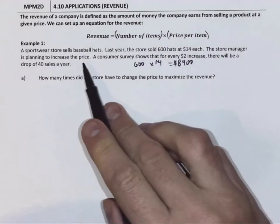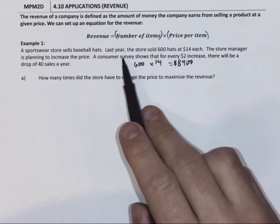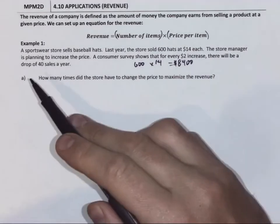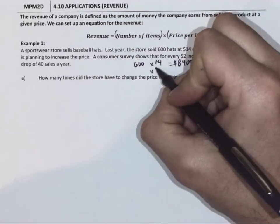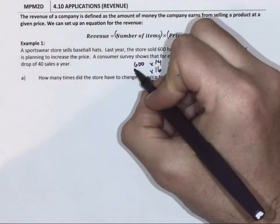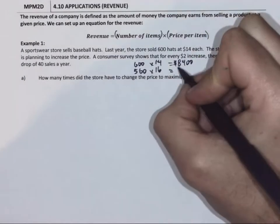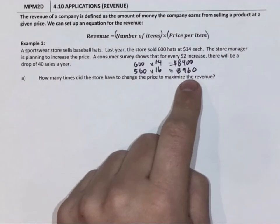The store manager is planning to increase the price. So from $14 it's going to go up. A customer survey shows that for every $2 the price goes up, there will be a drop of 40 sales. So every time it goes up $2, we're going to lose 40. One situation is 560 times 16, which is going to be $8,960, which still means that the company made more money.